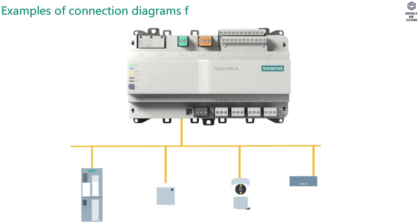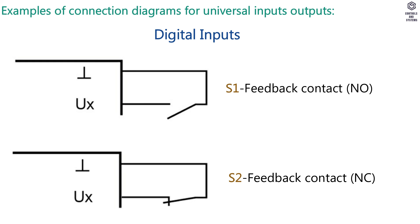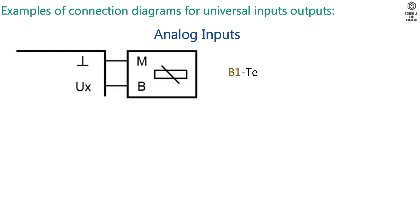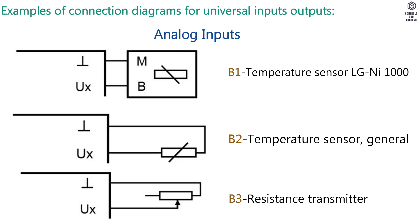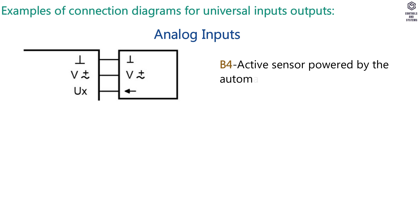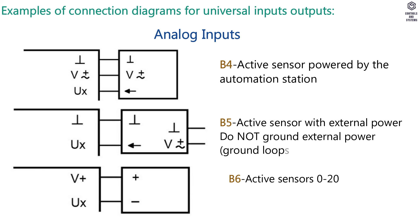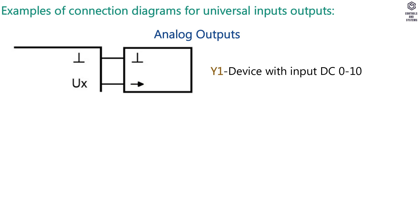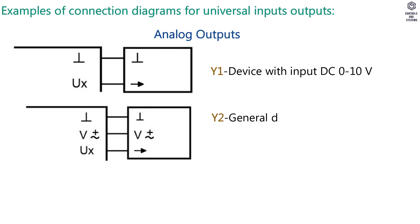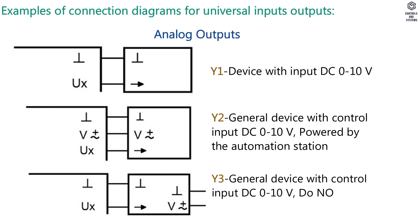Examples of Connection Diagrams for Universal Inputs/Outputs. Digital Inputs: S1 Feedback Contact NO; S2 Feedback Contact NC. Analog Inputs: B1 Temperature Sensor LG-NI 1000; B2 Temperature Sensor General; B3 Resistance Transmitter; B4 Active Sensor powered by the Automation Station; B5 Active Sensor with external power (do not ground external power); B6 Active Sensor 0 to 20 mA or 4 to 20 mA. Analog Outputs: Y1 Device with inputs as DC 0 to 10V; Y2 General device with control inputs as DC 0 to 10V powered by the Automation Station; Y3 General device with control inputs as DC 0 to 10V (do not ground external power).